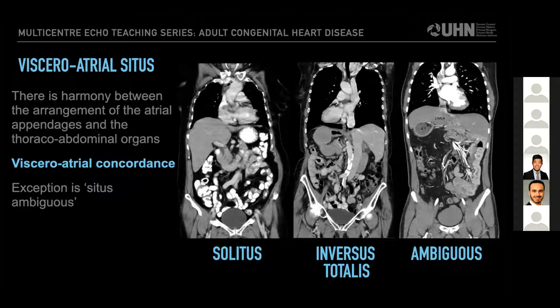There exist rare patients in which the situs of organ systems cannot be accurately determined—termed heterotaxy or situs ambiguous. We see here a patient with a broad liver spanning the entire abdomen, a right-sided stomach, and polysplenism. This often occurs in the context of cardiac isomerism, in which the atria are mirrored, resulting in a patient with two morphological right or left atria.